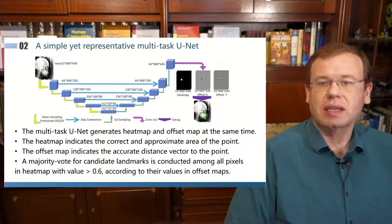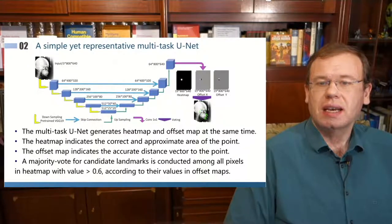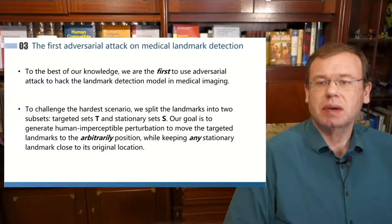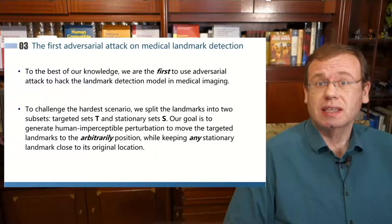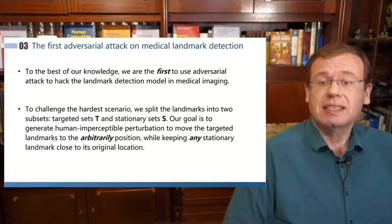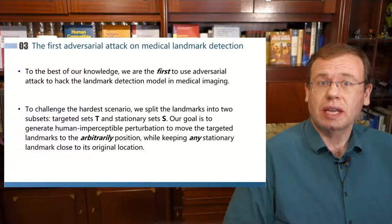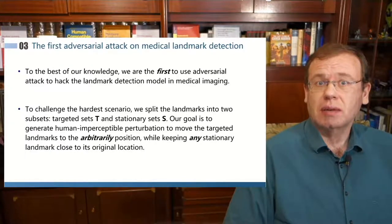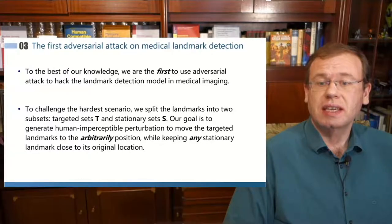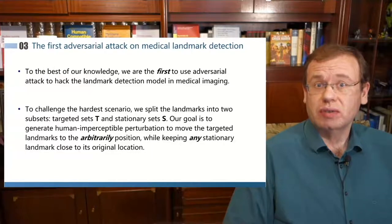But here they take the U-Net as an example using a multitask loss where they predict the different landmarks. And what I found very interesting about this paper is, first of all, it's the first paper that I'm aware of that does this landmark attack. And second, they can also focus their attacks on individual landmarks. And they shift only a subset of the landmarks to arbitrary positions and the other landmarks remain stationary. Very interesting approach.